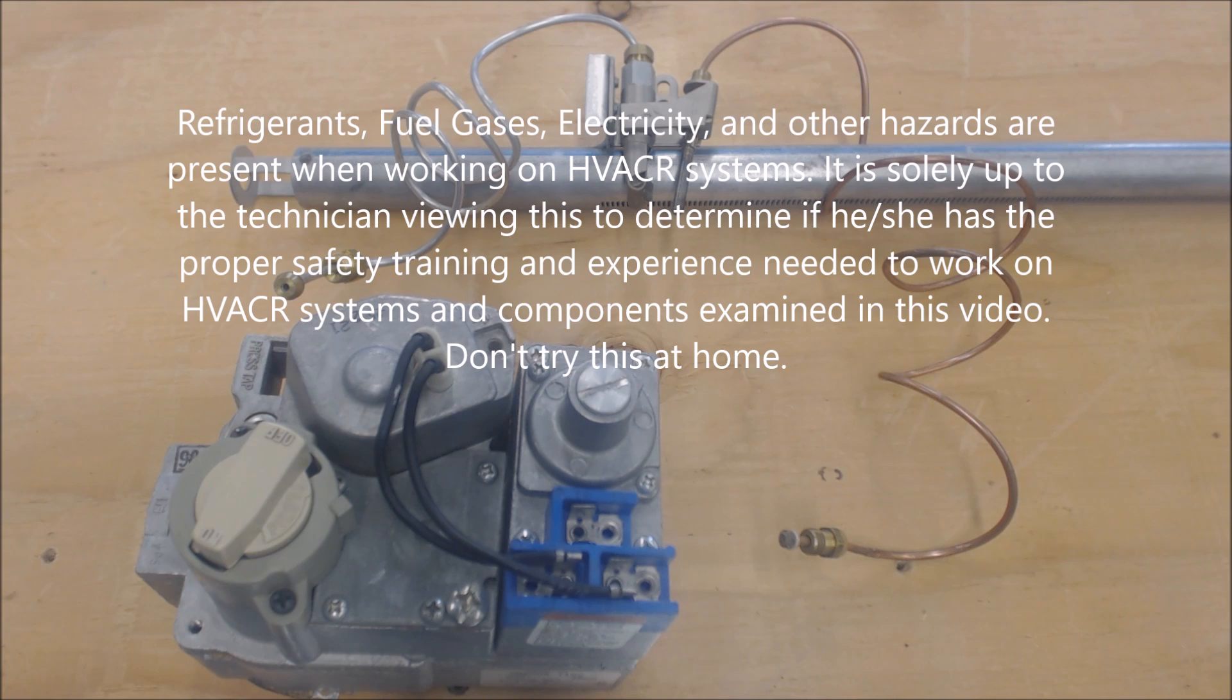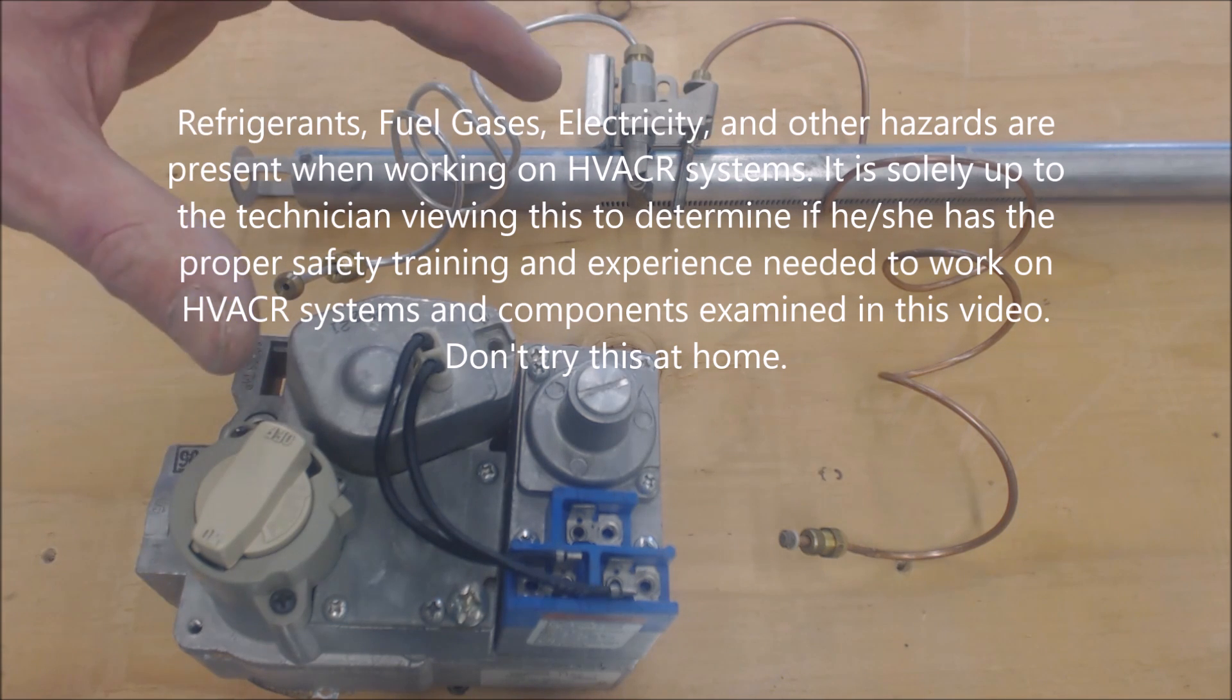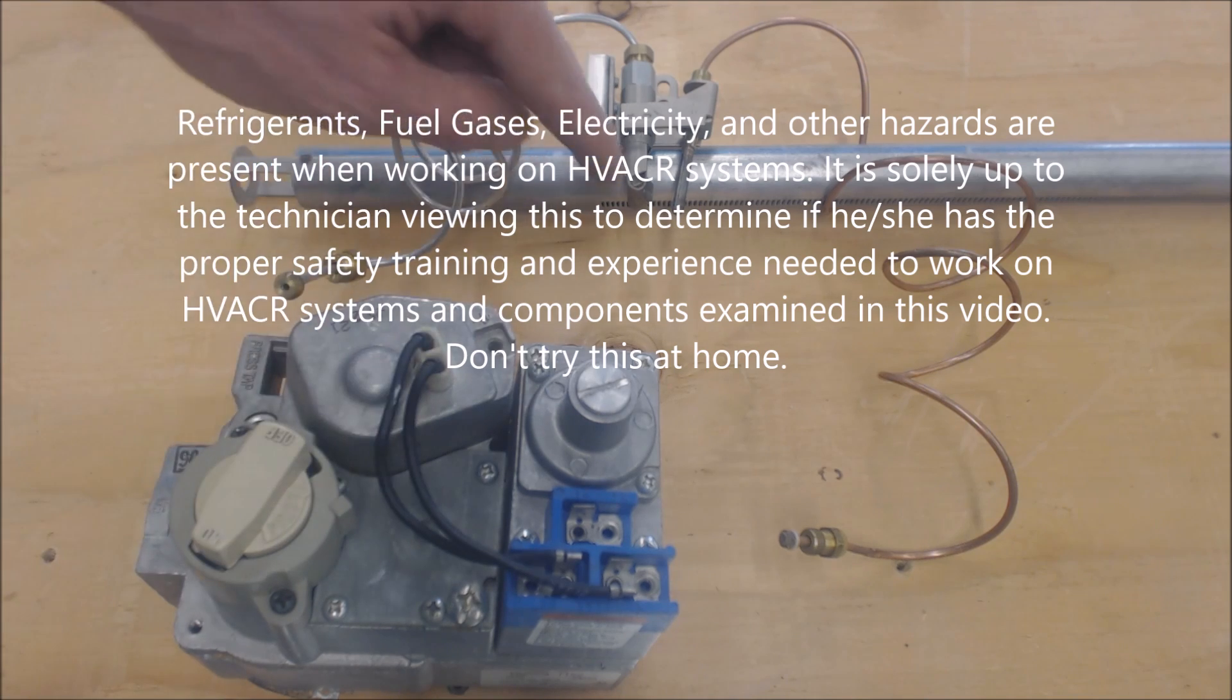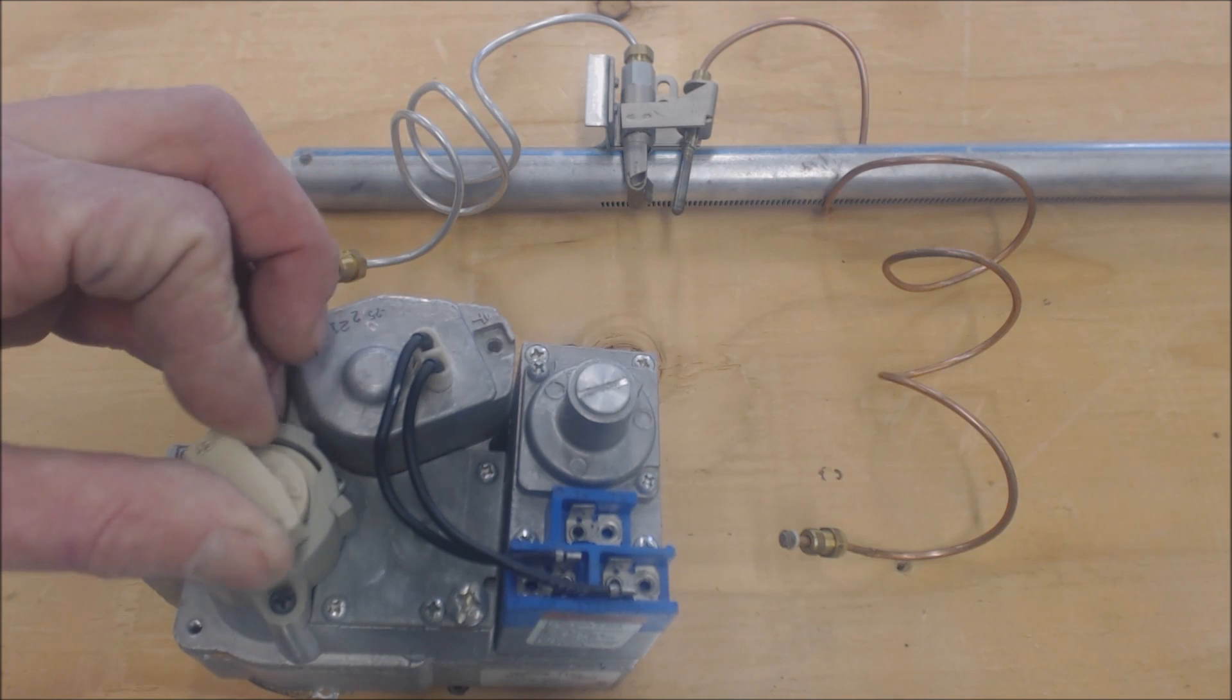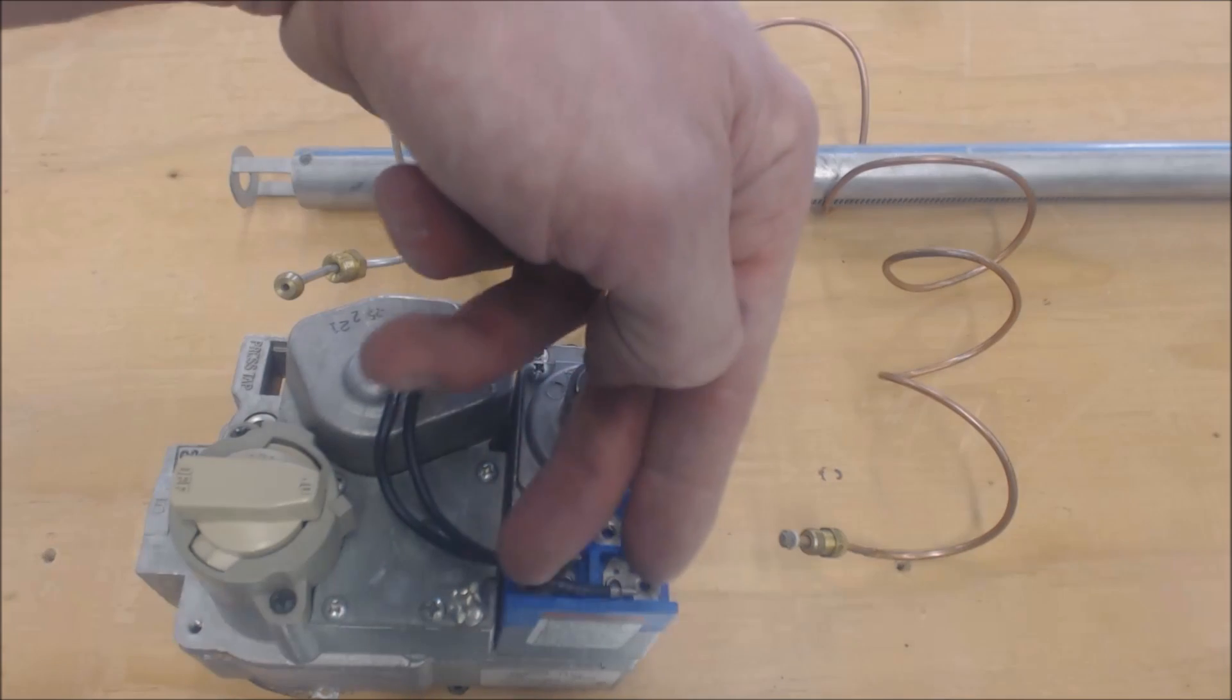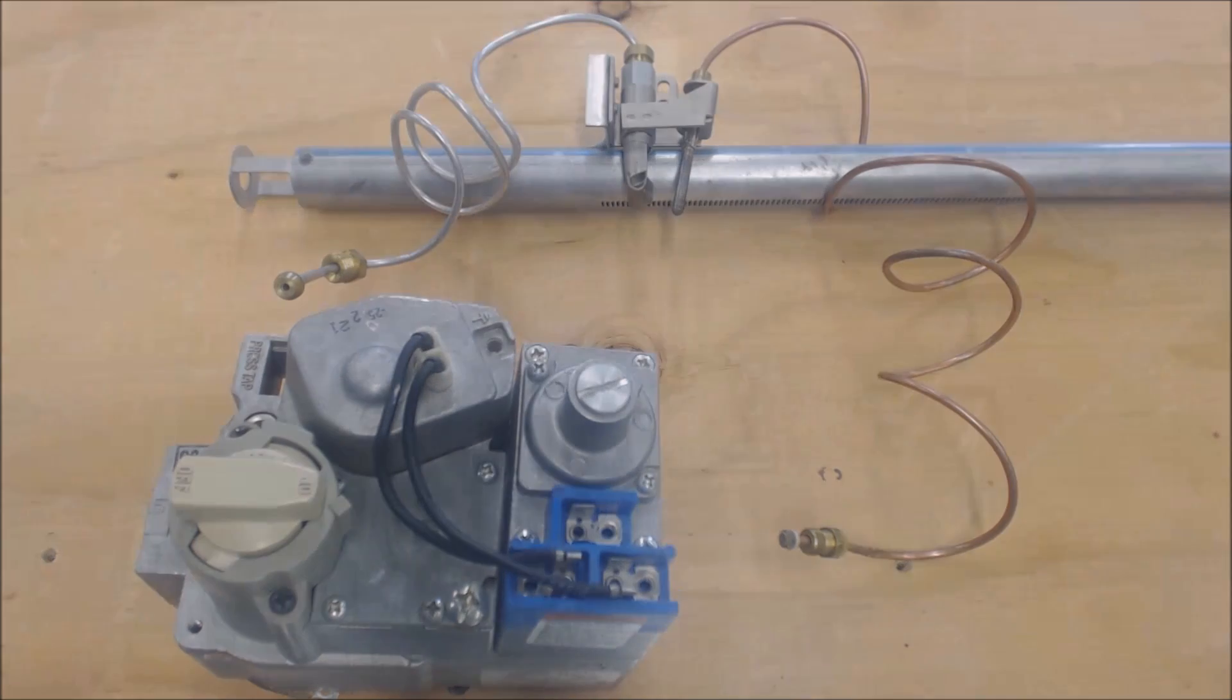Hey guys, this is AC Service Tech. Today we're looking at the combination gas valve and thermocouple, and how the two work together to hold the pilot on. After you have a pilot lit, you can turn this gas valve to on and power it with 24 volts to get the main burner to light.